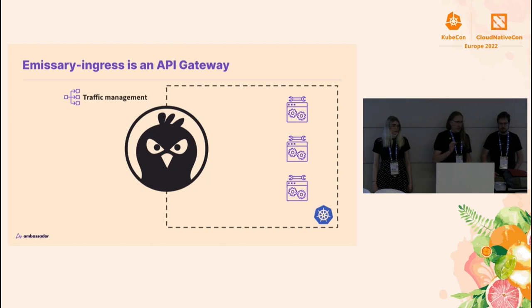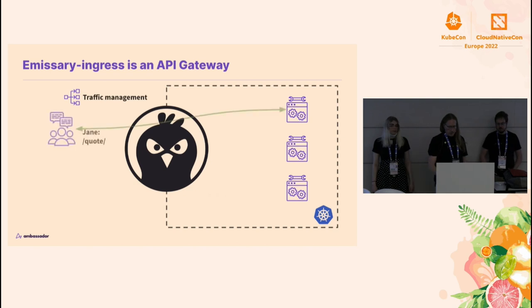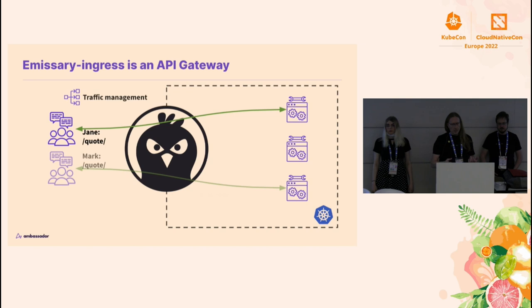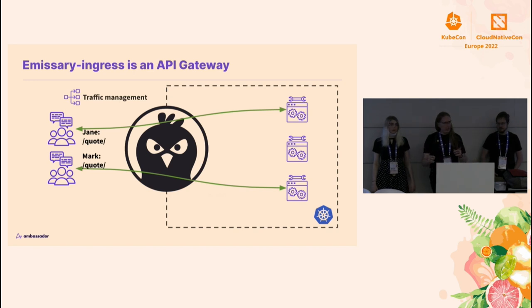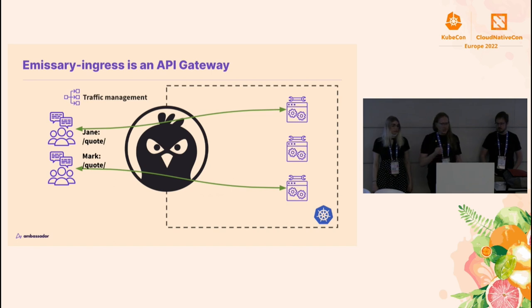It is an API gateway. One of the core roles of an API gateway is routing traffic. If you have a user Jane who wants to request a quote from some service, she can do that. A user Mark can also request a quote — they might not talk to the same service. That might be for load balancing, or maybe they're users in different tenants. This is a core function of an API gateway, but it is not the only function.